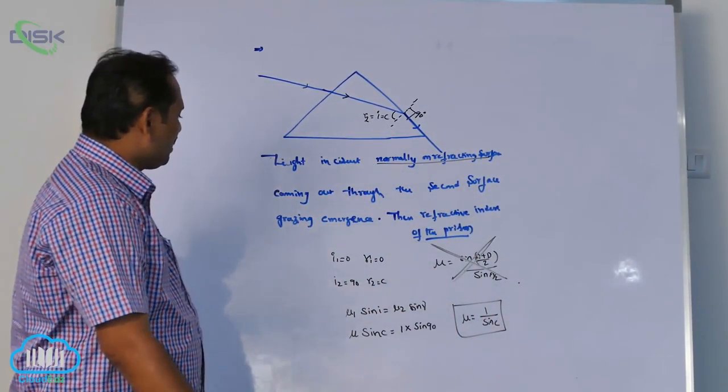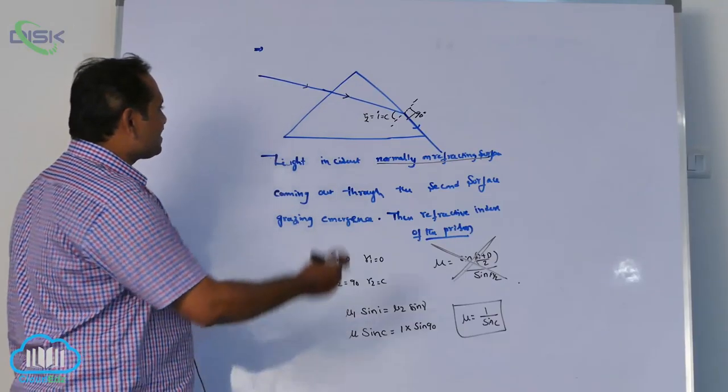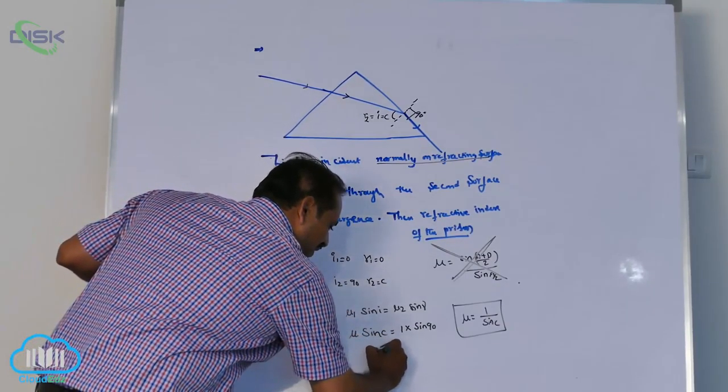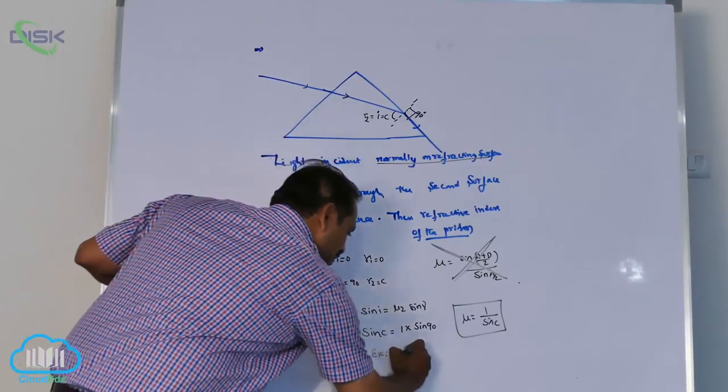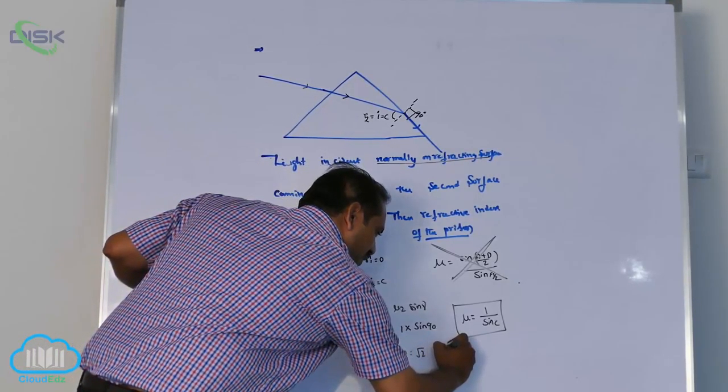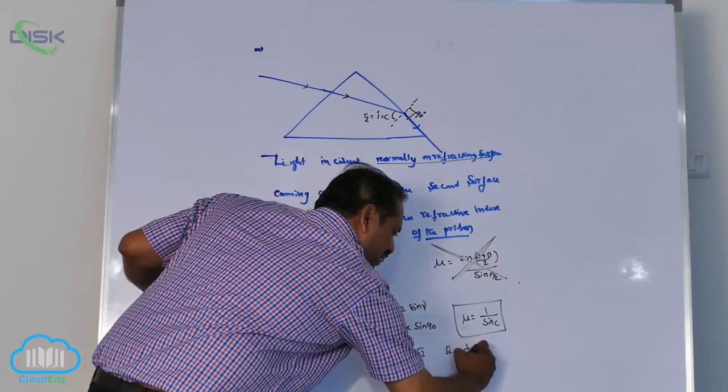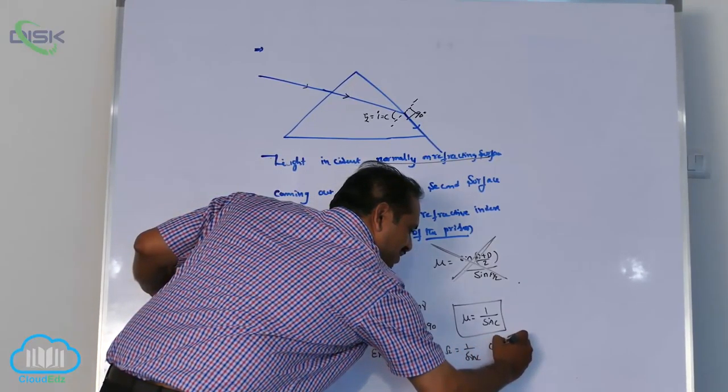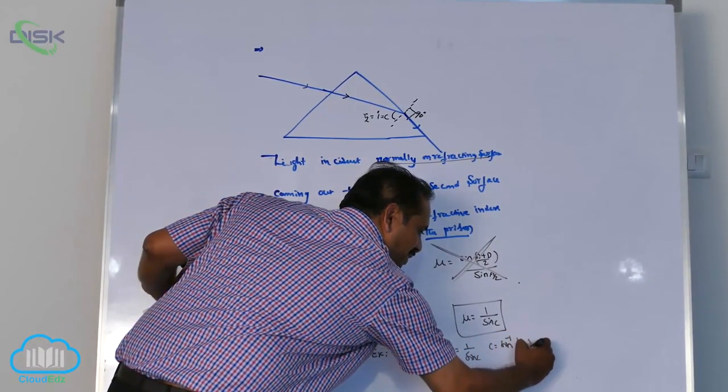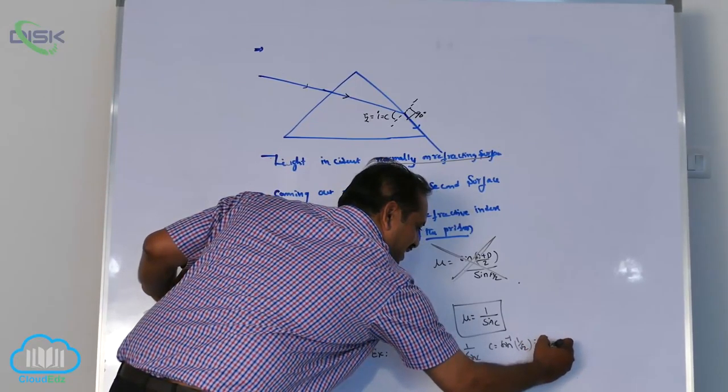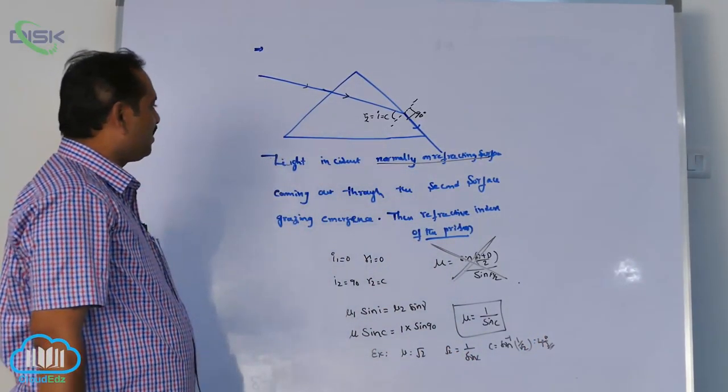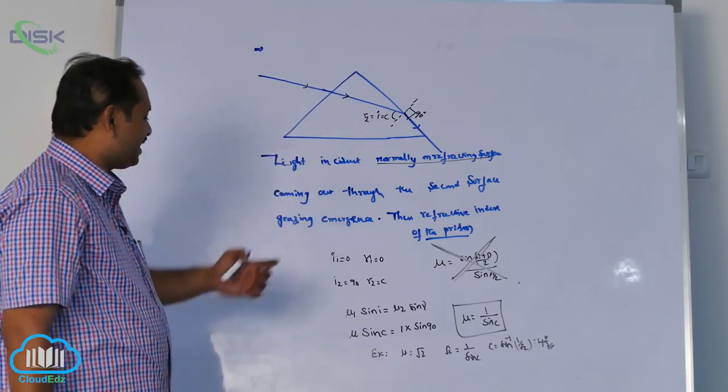For example, if they give me refractive index as, for example, if they give refractive index as root 2 for me, μ equal to root 2, then I am going to apply like this: root 2 equal to 1 by sine c, c equal to sine inverse of 1 by root 2. All of you know I think so, 45 degrees is the critical angle of that surface, known as prism critical angle.